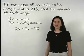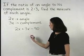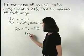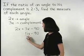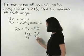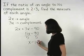And simplifying on the left side, we have 5x equals 90. And dividing both sides by 5, we find that x equals 18.